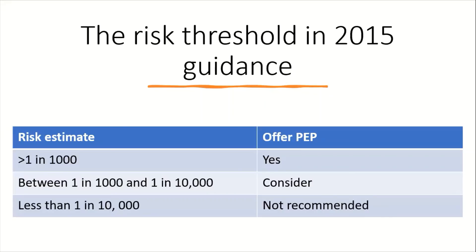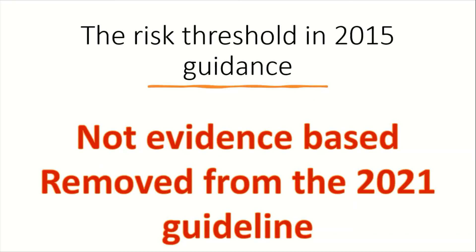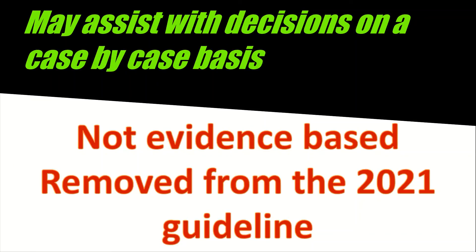In the older 2015 guidance, a table specified that if the risk estimate was greater than 1 in 1,000, PEP should be offered; if the risk was between 1 in 1,000 and 1 in 10,000, PEP should be considered; and if less than 1 in 10,000, PEP was not recommended. These thresholds were not evidence-based and have therefore been removed from the 2021 BASH guidelines, though the guidelines recognise they may still assist services in making case-by-case decisions.